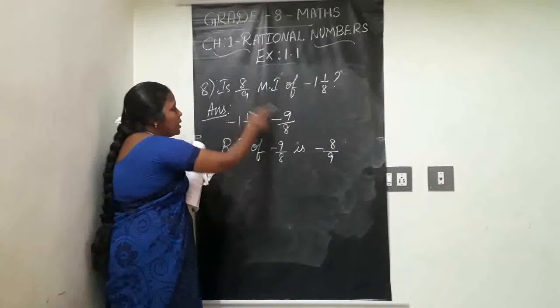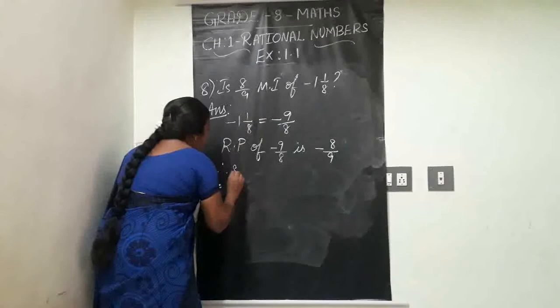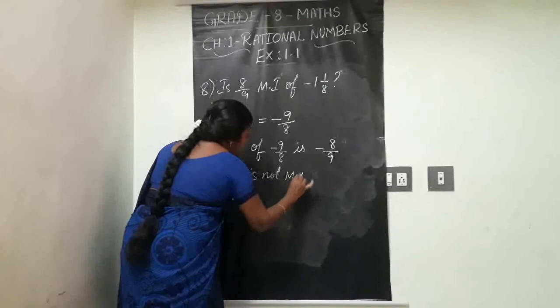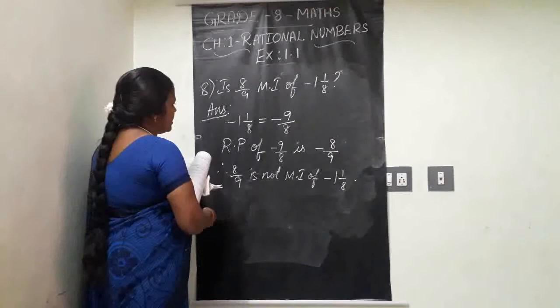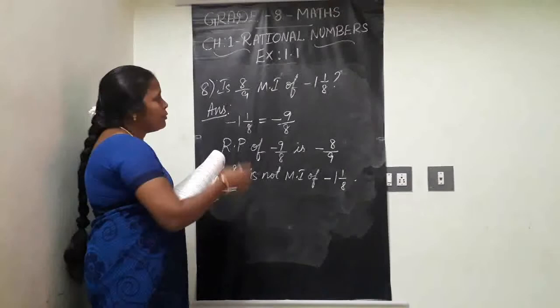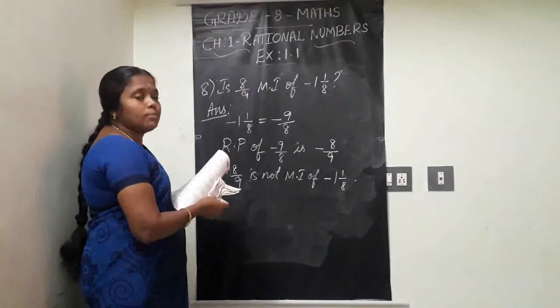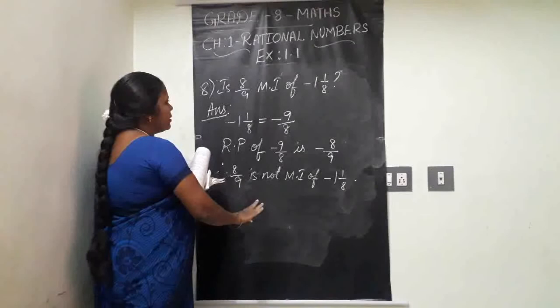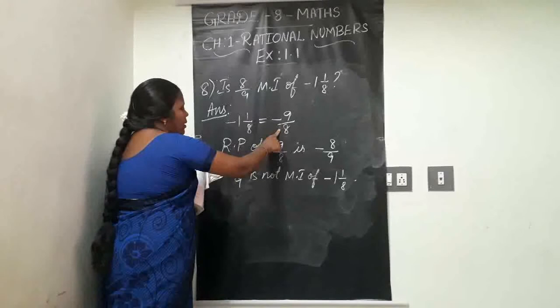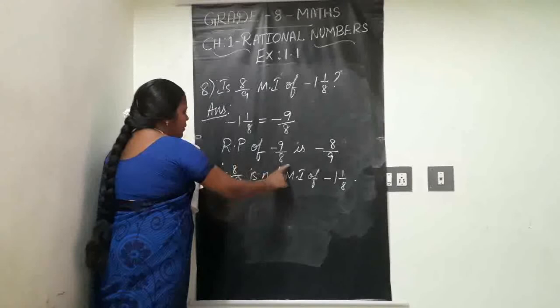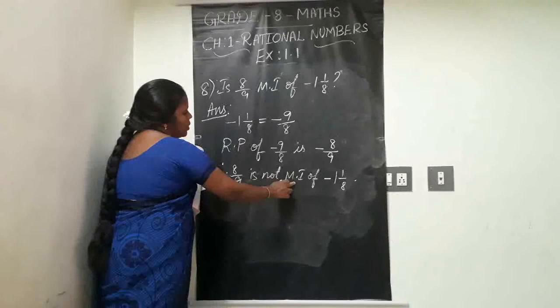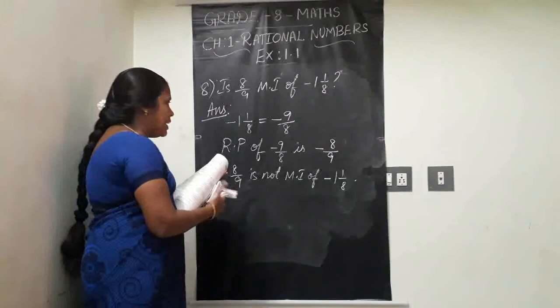Since the given 8/9 is positive and the actual reciprocal of minus 9/8 is minus 8/9, both are not equal. Therefore, 8/9 is NOT the multiplicative inverse of minus 1⅛ (which is minus 9/8). We can conclude: 8/9 is not the multiplicative inverse of minus 1 and 1/8.